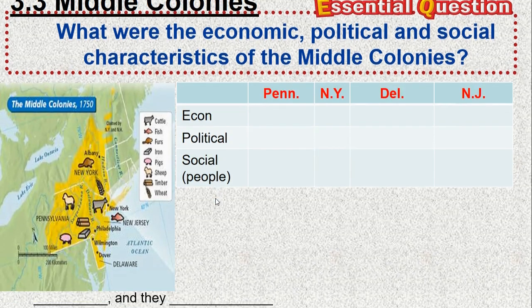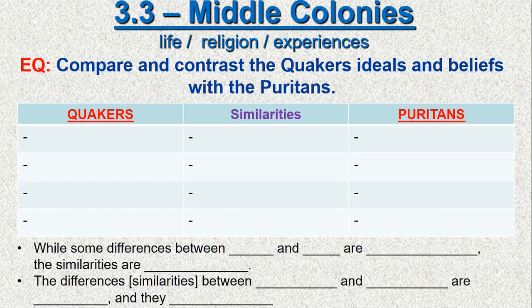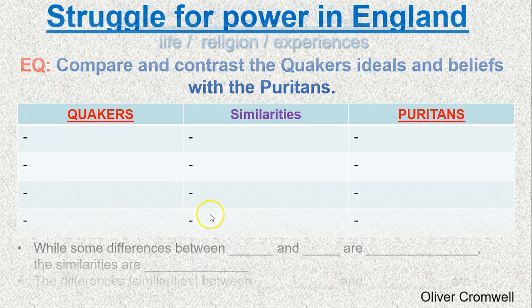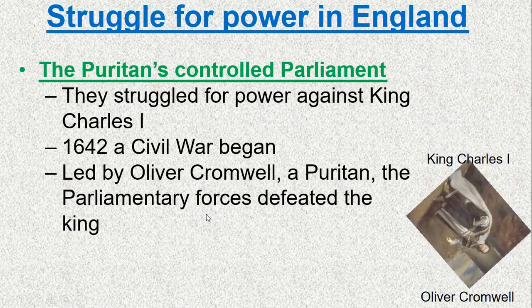Put that into your left side. There's a second essential question here on the Quakers and the Puritans — we want to be able to compare and contrast them, identify some similarities. There's a stem statement at the bottom where you could make a thesis or a mini claim statement on what their differences were but yet what were their similarities.